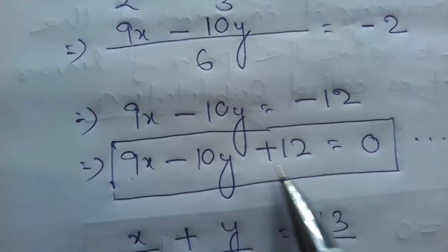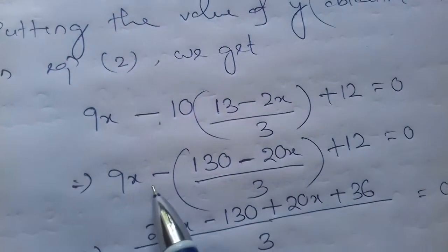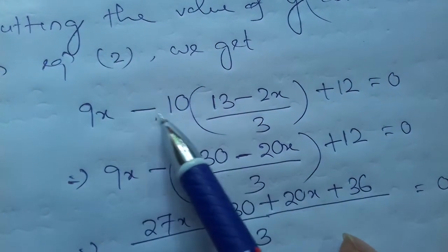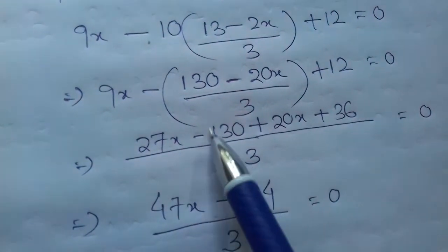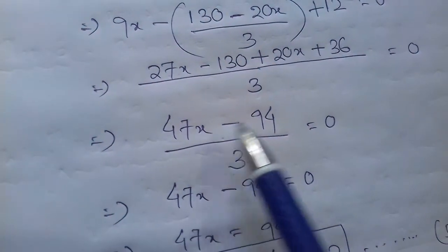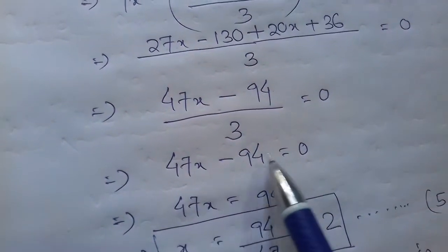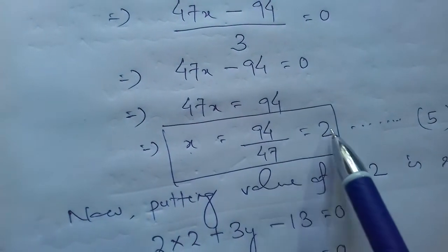Putting the value of y from equation 4 into equation 2, which is 9x − 10y + 12 = 0: substituting gives 9x − 10 × (13 − 2x)/3 + 12 = 0. Multiplying through: 27x − 130 + 20x + 36 divided by 3 = 0, giving 47x − 94 = 0, so 47x = 94, and x = 94/47 = 2.